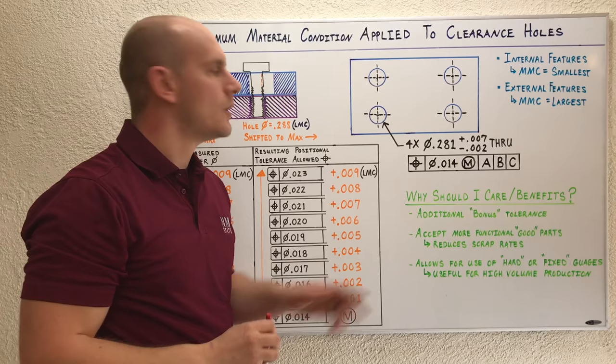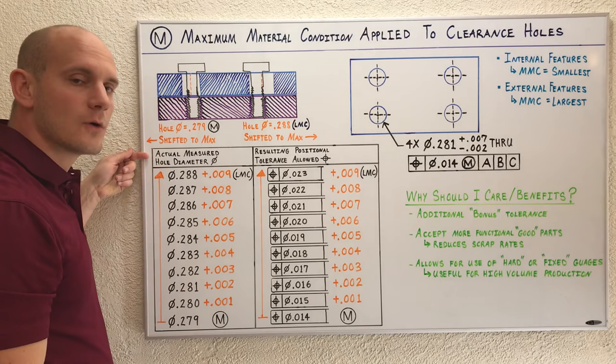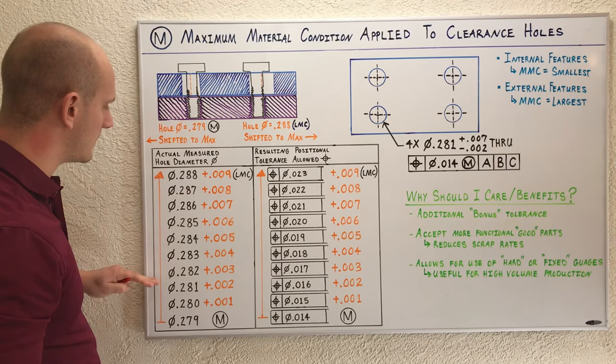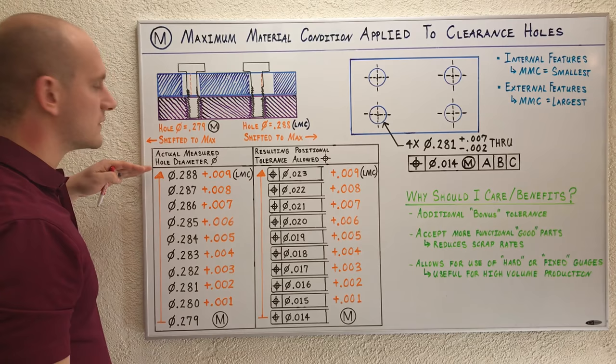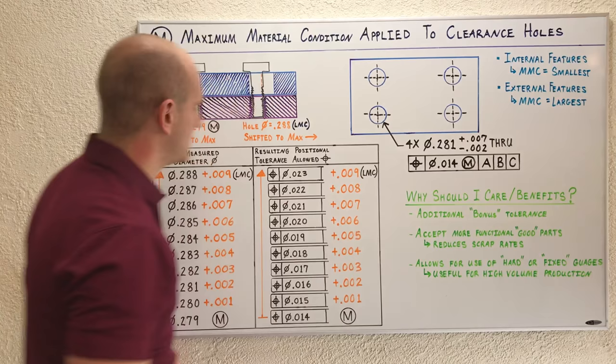The best way to look at this is with a table which I've created right here. Here I have the actual measured hole diameters in this column. I've listed all possible hole sizes starting with the maximum material condition size going to its least material condition size. I got these values by taking 281, subtracting 2,000 to get my MMC size, then adding 7,000 to get my LMC size.